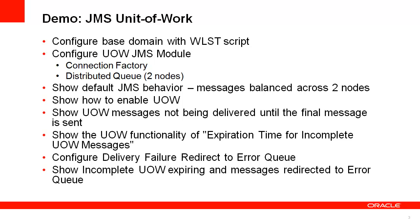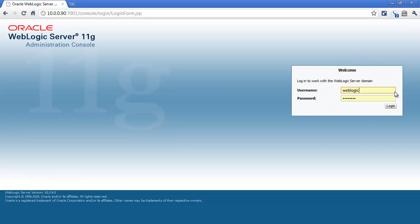Then I will cover the code that is used by the message producer to enable the Unit of Work. For the live demo, I will first show you the example that sends messages without Unit of Work enabled. Then I will use the method in the producer that sends a complete Unit of Work and we will see that being delivered in one batch. Finally, I will show you an example where an incomplete Unit of Work is sent and redirected to an error destination after a timeout period. Let's start with the demo.